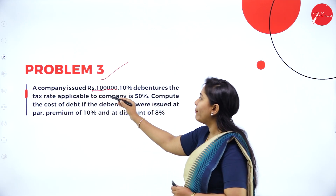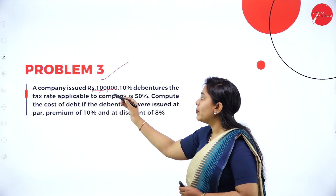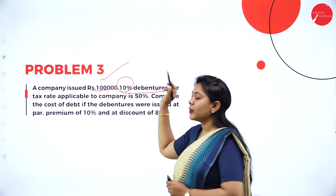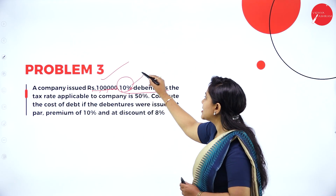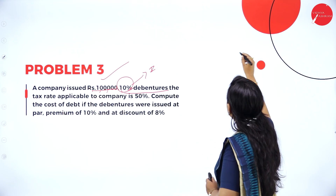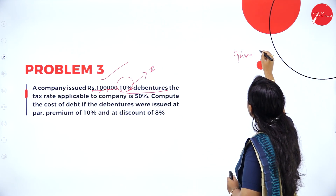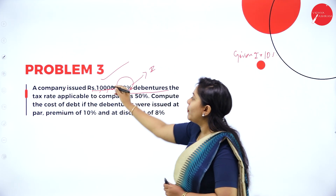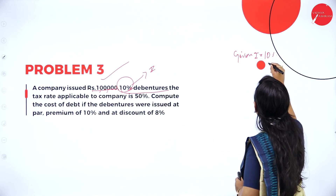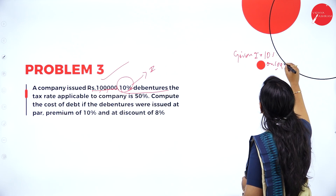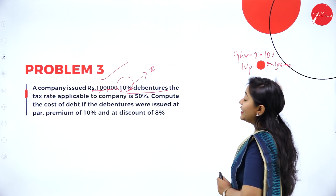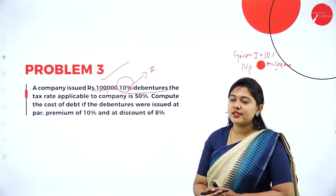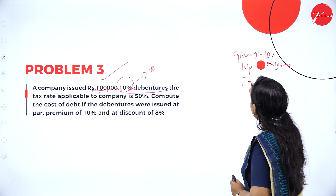A company issued rupees 1 lakh, 10 percent debenture. What is the interest you are supposed to pay? It is 10 percent. So, what is given? Interest is 10 percent on 1 lakh rupees, which is the net proceeds. The tax rate applicable to the company is 50 percent — that is 0.5 as a decimal.